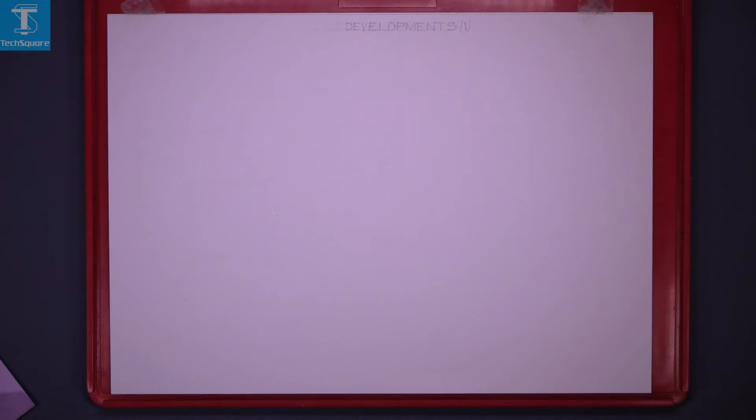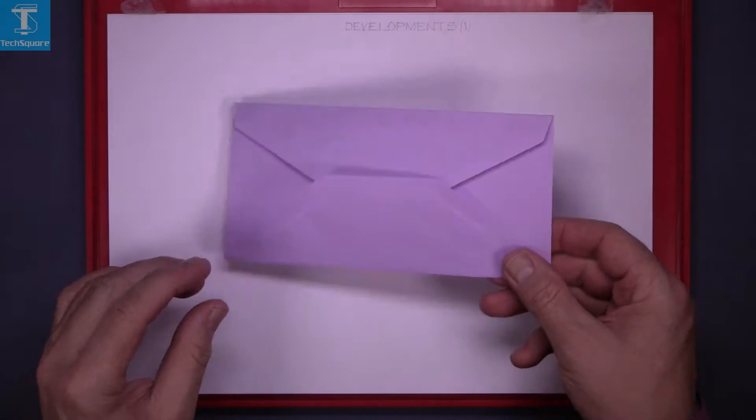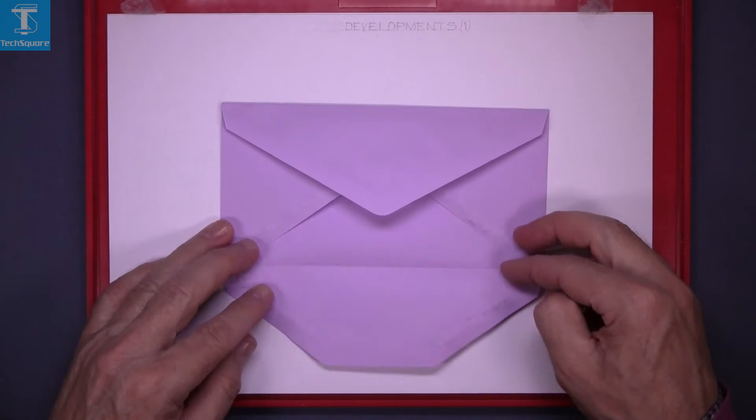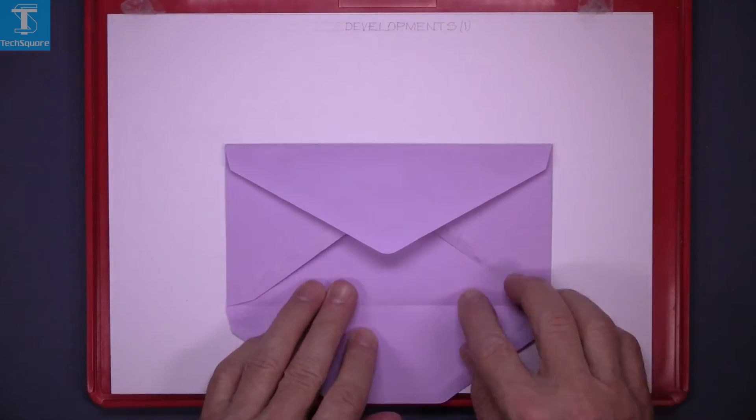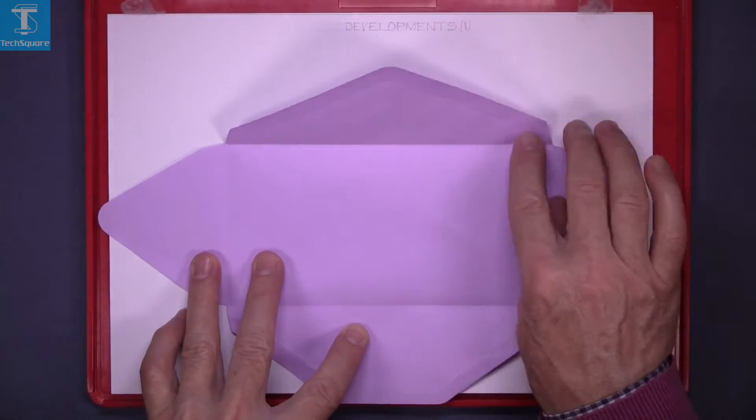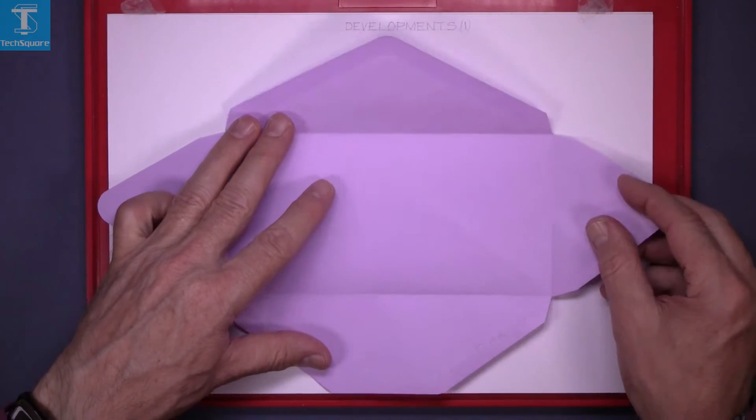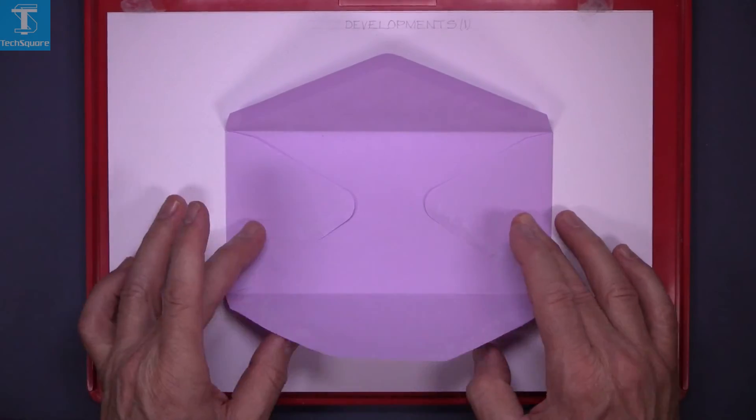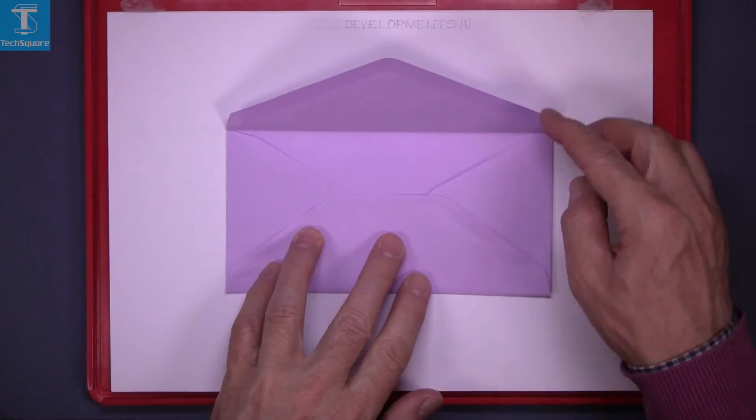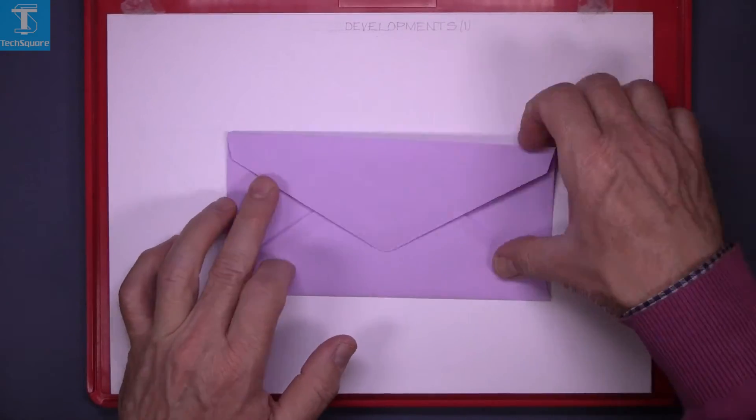Developments one. What development means is what the material looked like when it was marked out and cut out. So this is the development of an envelope. It's the cut out of the envelope before it's folded into position.